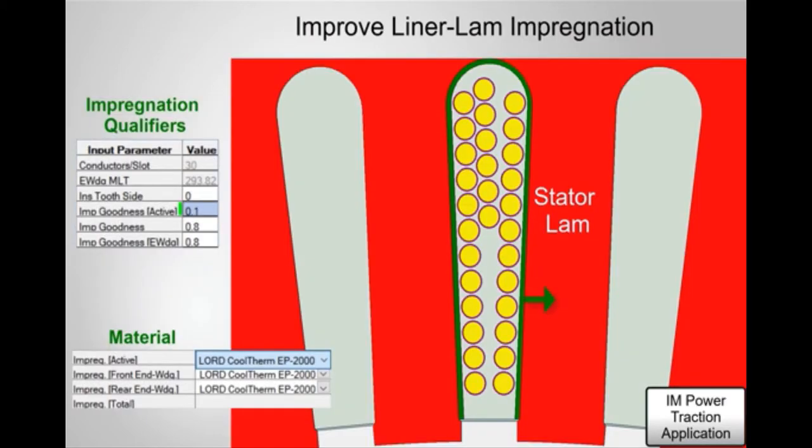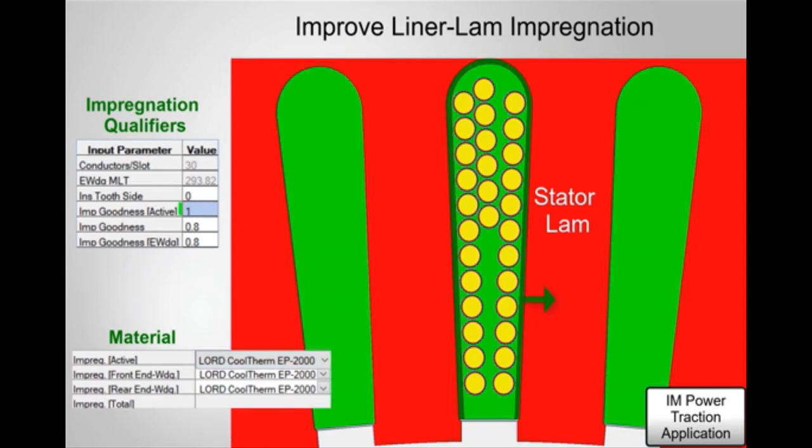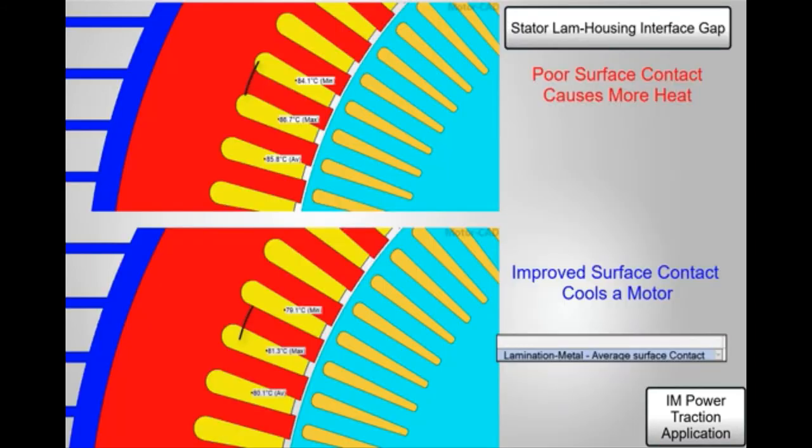MotorCAD enables users to account for the manufacturing effects that could significantly affect a machine's behavior. Examples of these in the thermal model are the quality of the impregnation in the winding and the interface gap between the state of lamination and housing.